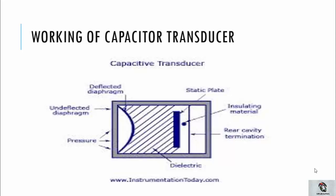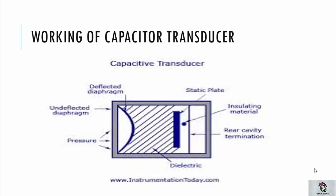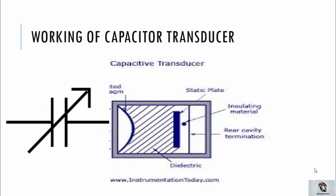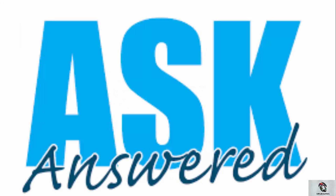This is how a capacitor transducer looks. As you can see in the diagram, it has a static plate, an insulating material, rear cavity termination, and the important part — the deflecting diaphragm. Whenever external force or pressure is applied on the diaphragm, it tends to move inside, due to which the distance between the two plates decreases. According to the formula C = ε₀εᵣA/d, capacitance is inversely proportional to the distance between the plates, and so the capacitor acts as a variable capacitor.